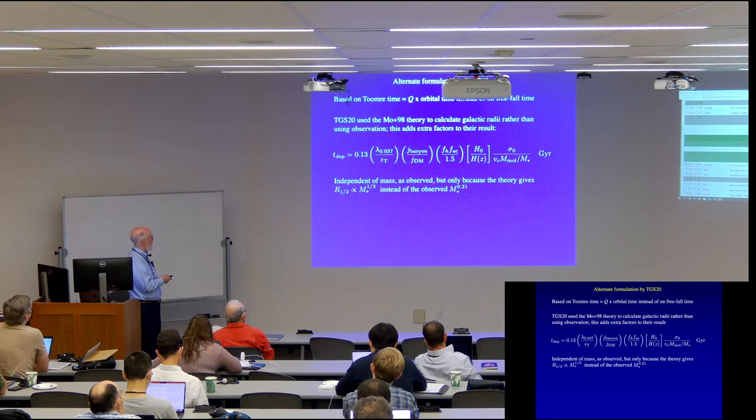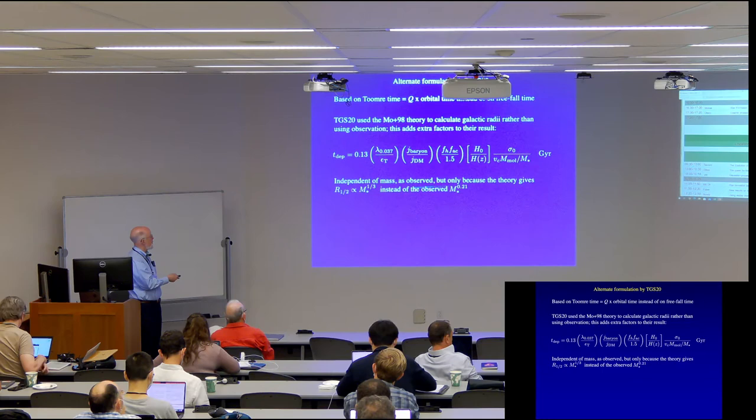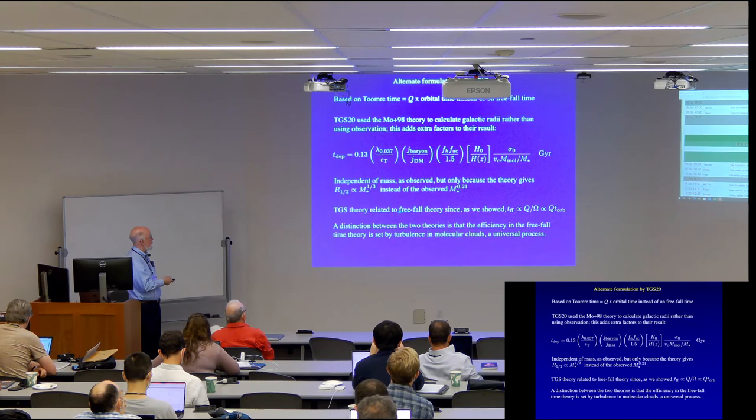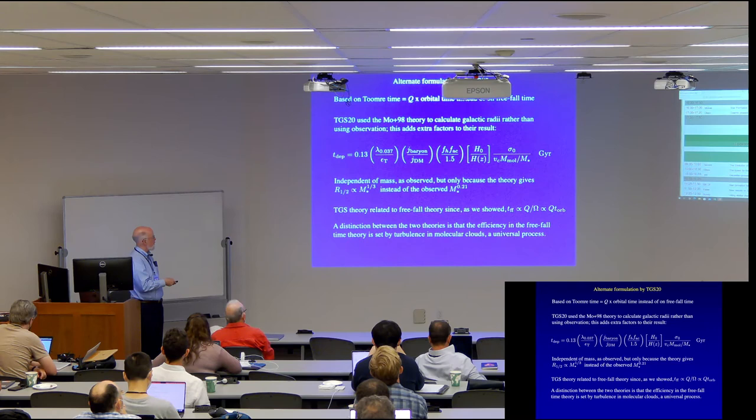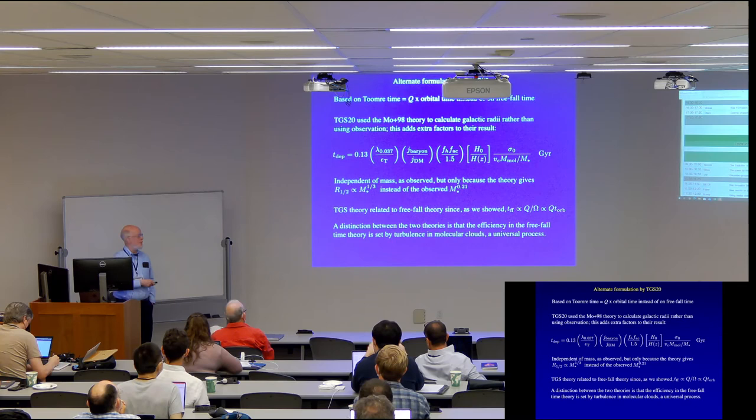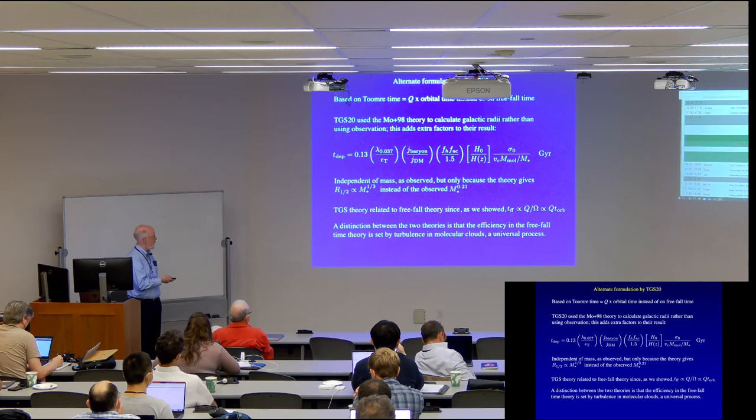Now, it's independent of mass as observed, but that's only because this theory gives that the half mass radius goes like the virial radius, which is then m to the one-third, instead of the observed 0.21. So it's related to our theory since, as I just showed, the freefall time goes like q over omega, which is like q t orbital, which is just what they assumed. And I just point out that, as I mentioned at the beginning, a distinction between the theories is that the freefall theory is based on that this value of epsilon ff is set by turbulence in molecular clouds, which is a universal process. So the fact that it's a constant makes some sense. Okay.